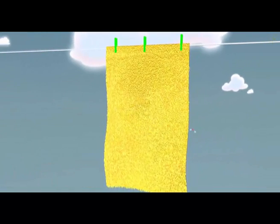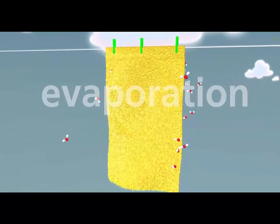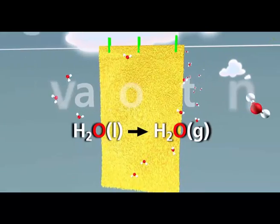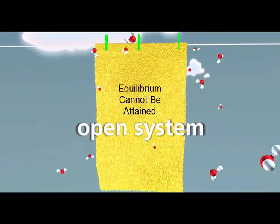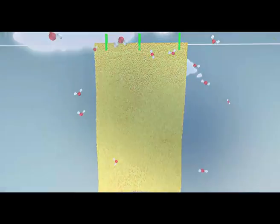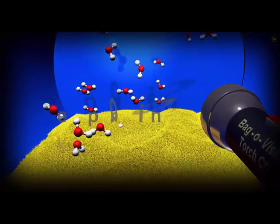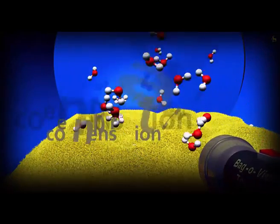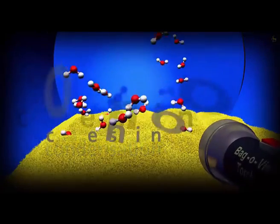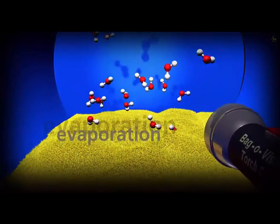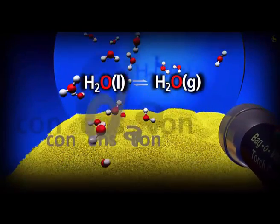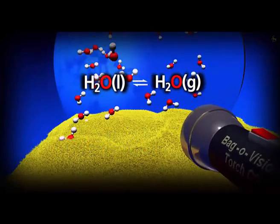Consider a wet towel hung out on a line. High energy water molecules can evaporate and are removed in the breeze, continuing until the towel is dry — this is an open system. If the wet towel is left in a closed sports bag, it does not dry. High energy water molecules evaporate and remain as vapour trapped in the atmosphere around the towel. At the same time, low energy vapour molecules condense on the surface of the towel to a liquid. The rate of evaporation exceeds the rate of condensation until the vapour becomes saturated, at which point a state of dynamic equilibrium is reached.